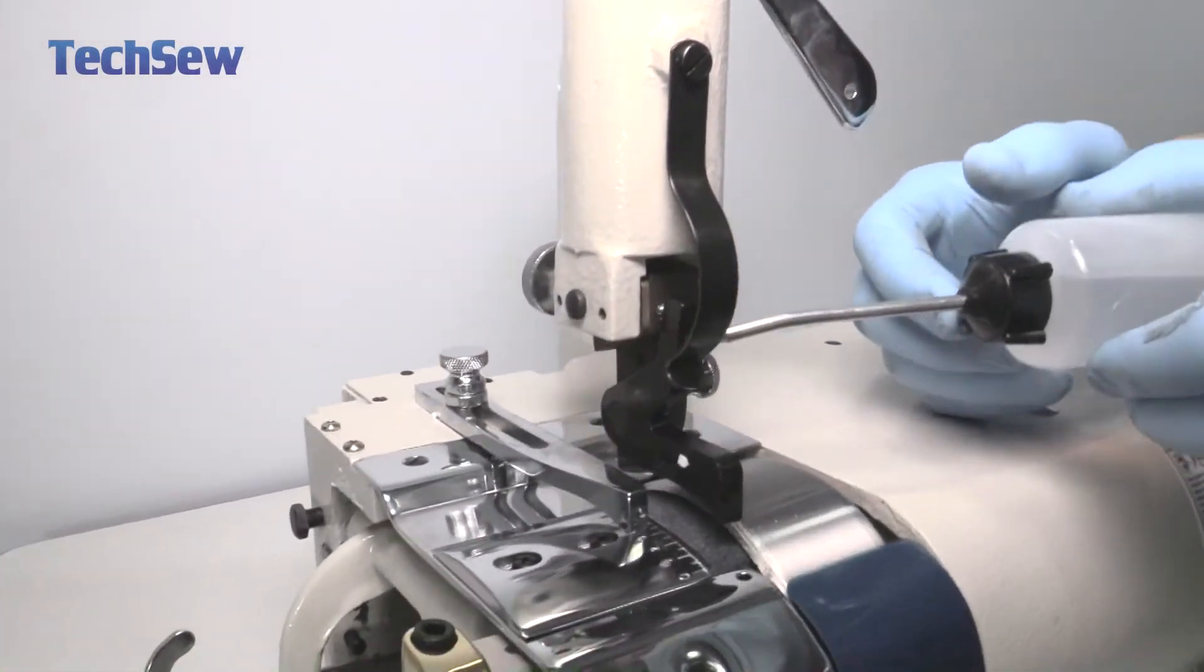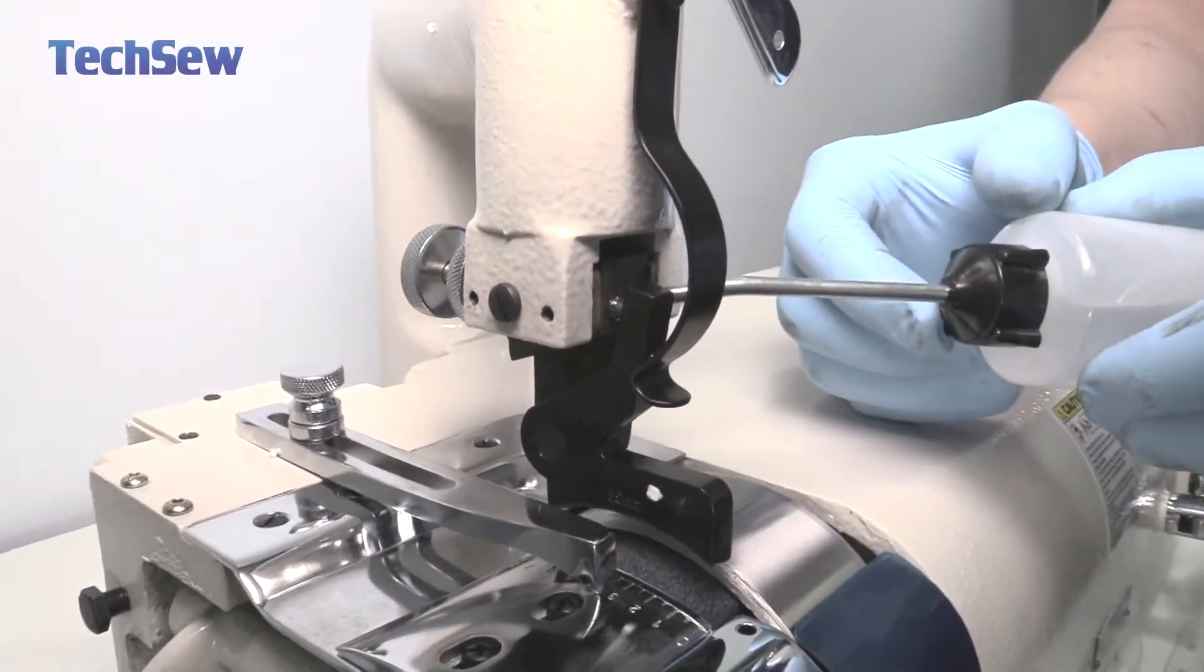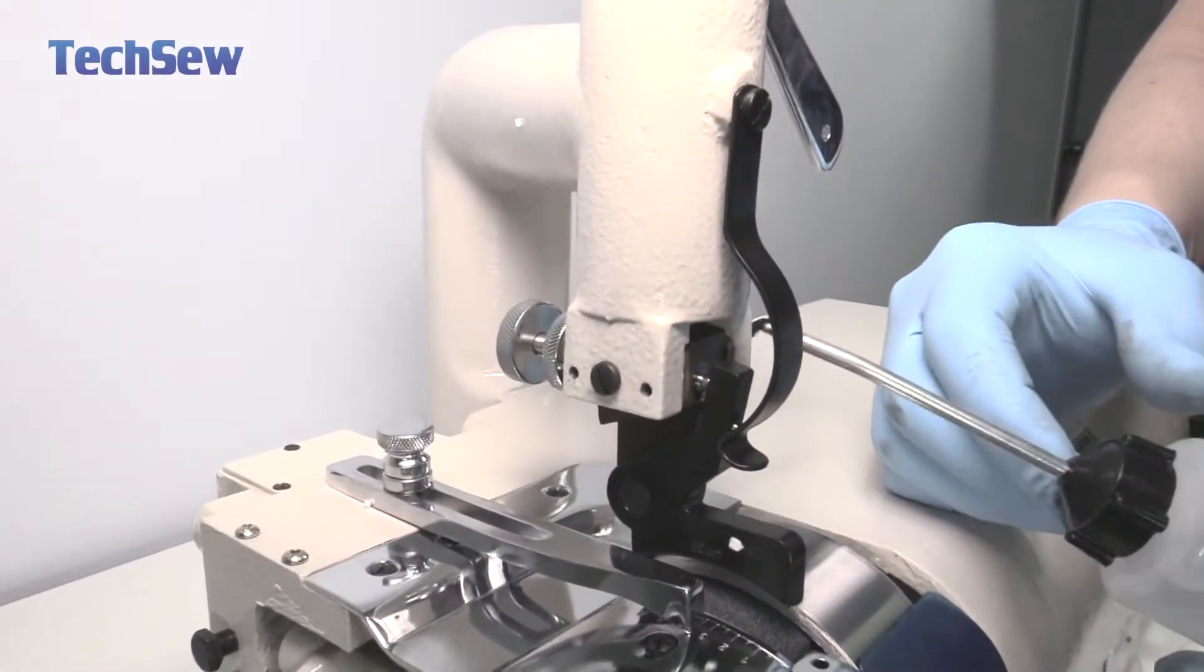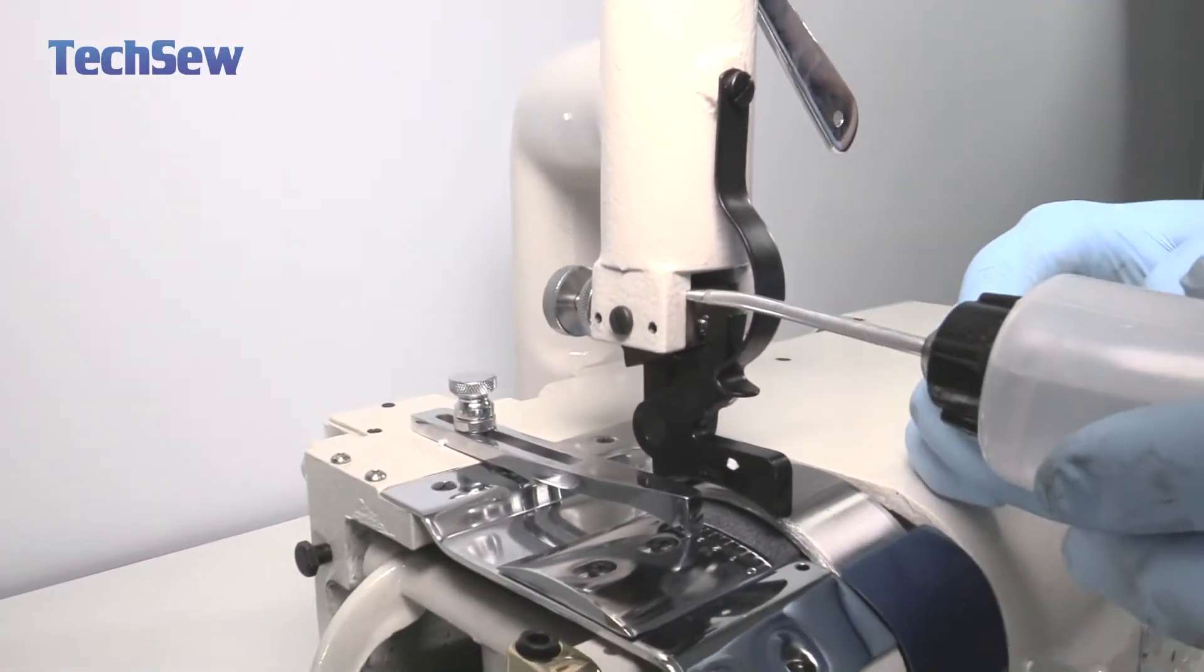Next you oil just behind the spring that maintains the foot angle. A little bit on the screw for the foot angle. On the brass sliders for the up and down movement. Just a couple drops on each.